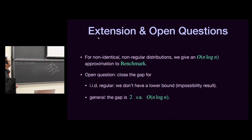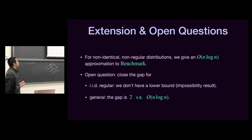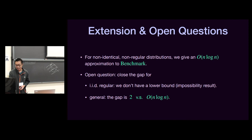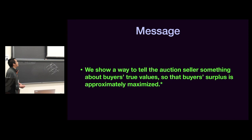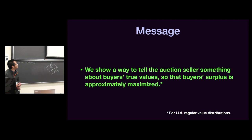Finally, let's discuss extensions and open questions. For the general case — non-identical distributions that may not be regular — we show a log-n approximation to the benchmark. There remain large gaps between upper and lower bounds: for IID regular, we have a constant upper bound but no lower bound; for the general setting, we have a lower bound of two but the upper bound is O(log n). We don't currently have good tools to close these gaps. Our main message is that we show a way to tell the auction seller something about the buyers' true values so that buyer surplus is approximately maximized.